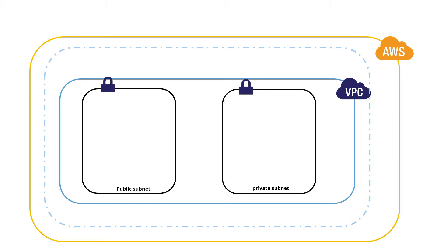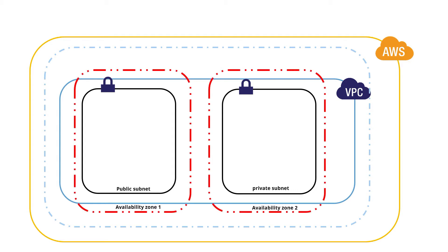Before we go any further, let us reiterate on what we have learned so far. Assume you have AWS and you create a VPC within a region. Within a VPC you have two different subnets — you call one a public subnet and the other a private subnet — and you create each one of these in a different availability zone. By now you must have known why we need a private subnet and a public subnet. We create a private subnet to host our database and a public subnet to have our web servers or web applications running.